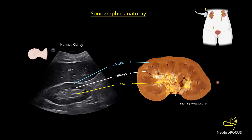The collecting system of the kidney is embedded in sinus fat. In a normal state, an undilated collecting system should not be visible. All you would see is a bright area in the middle of the kidney, which is sinus fat. The collecting system is visible only when it is dilated.